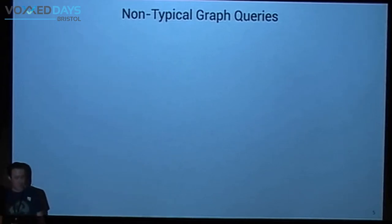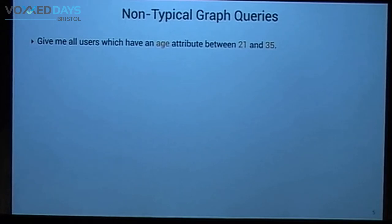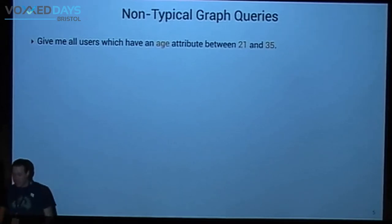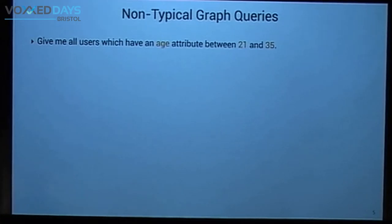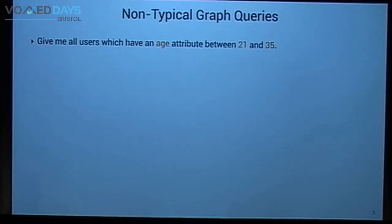What are non-typical graph queries — queries you should not ask a graph database if you want performance? For example, give me all users with an age between 21 and 35. That is actually really bad for a graph database focused on traversal, going alongside relations. This is something you should ask a relational database or a document store, because it just uses attributes on a certain object. Similarly, aggregations like age distribution of all users, or grouping users by name, are attribute-based queries on vertices.